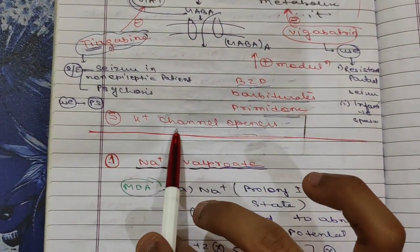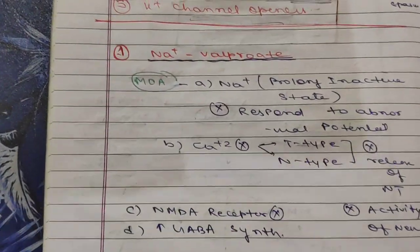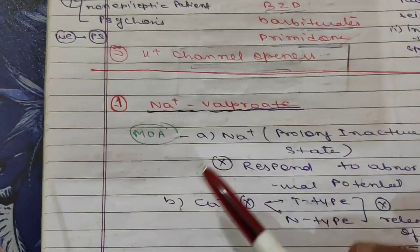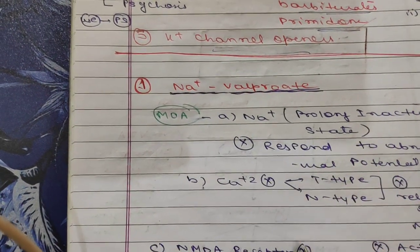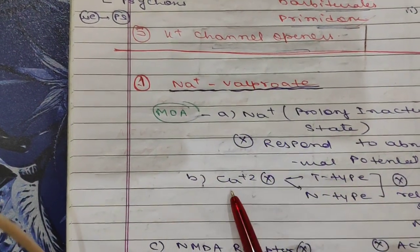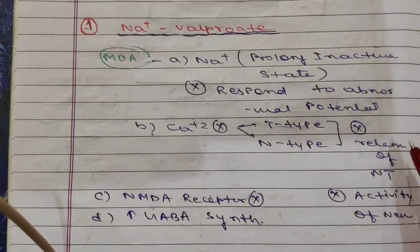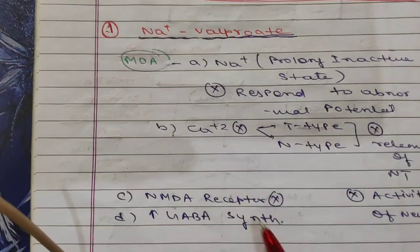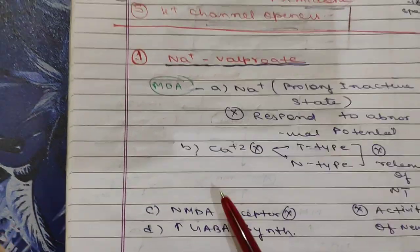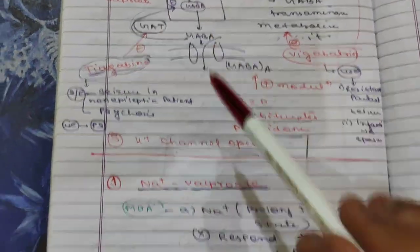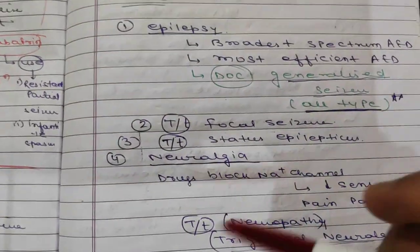The fifth category is potassium channel openers. Regarding sodium valproate's mechanism of action: it prolongs the inactive state of the sodium channel, inhibits calcium channels thereby decreasing neurotransmitter release, acts as an NMDA receptor blocker, and increases GABA synthesis. Sodium valproate is therefore a broad-spectrum drug.